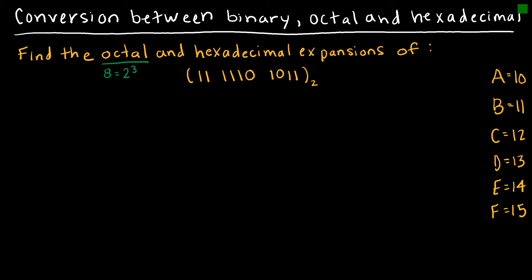Hexadecimal is base 16, and 16 is the same as 2 to the 4th. So obviously this is going to come into play as I'm converting these. This is going to be my octal expansion. In an octal expansion, I'm going to start at the right and group things into 3s, because 8 is 2 to the 3rd.